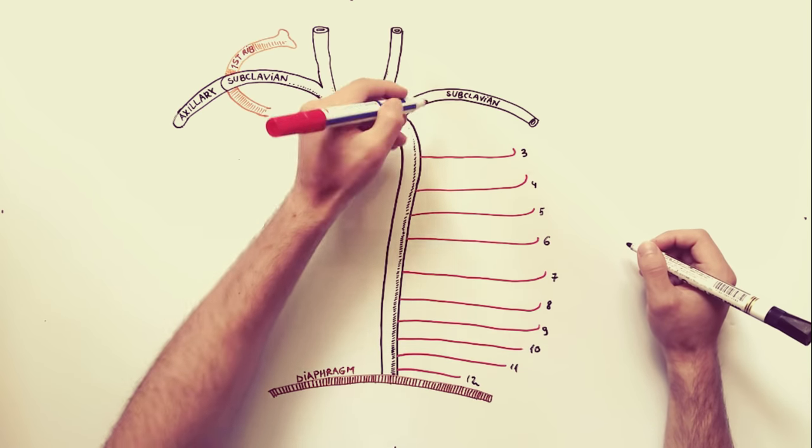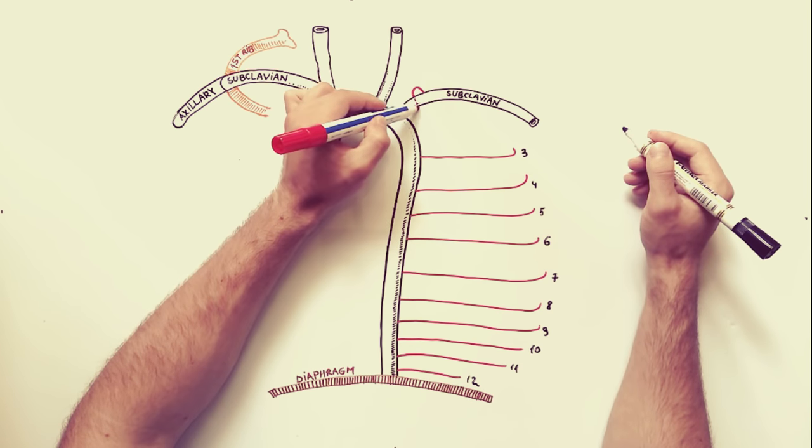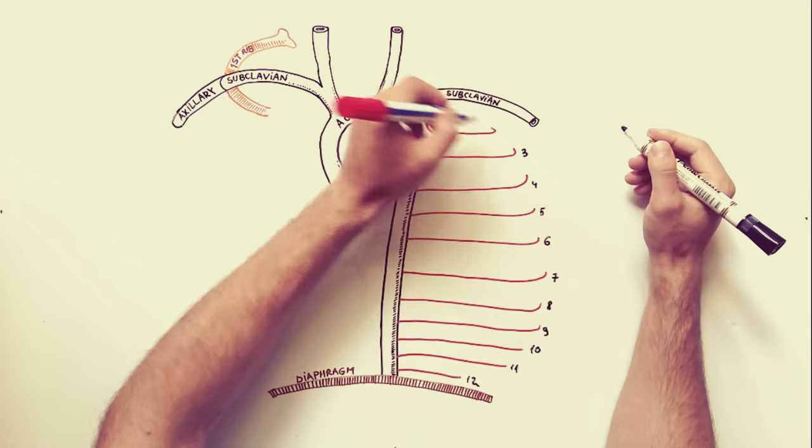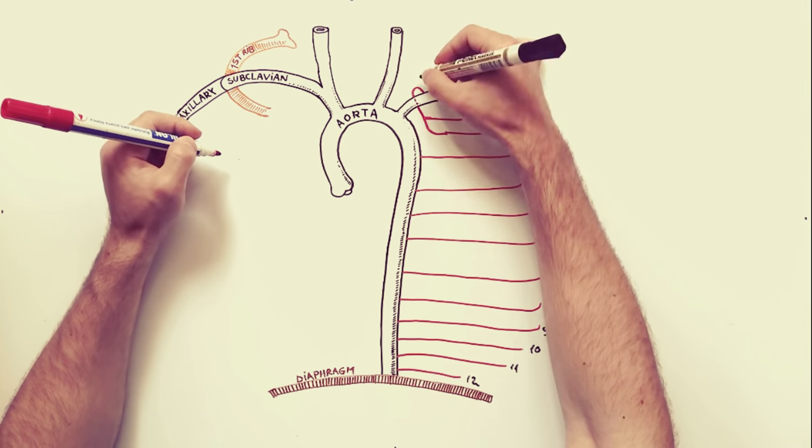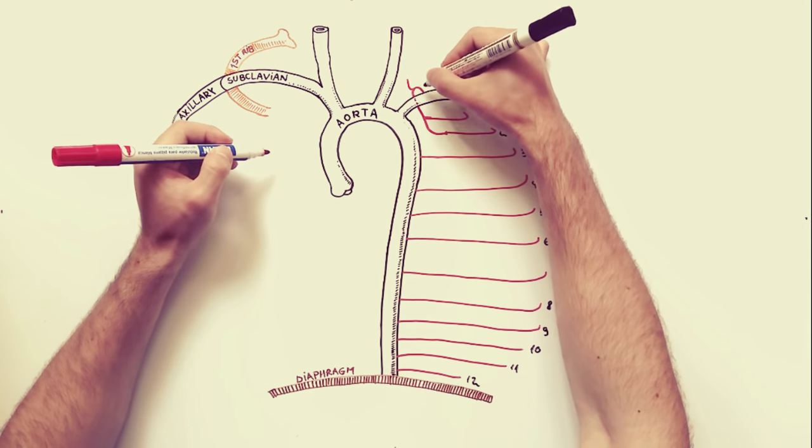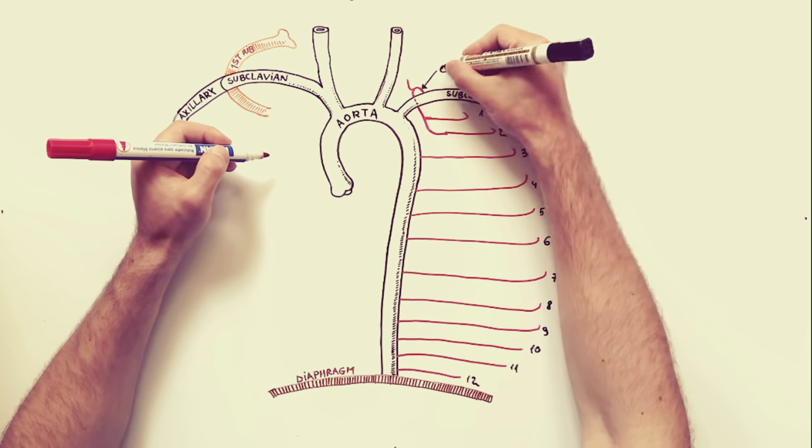Now we will discuss about the sources from the subclavian arteries. First to be put down is the costocervical trunk, which is arising from the subclavian artery. The costocervical trunk gives off two branches.